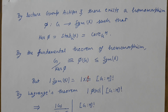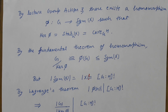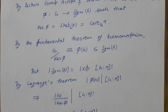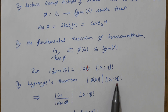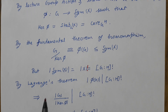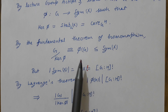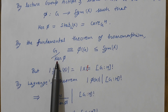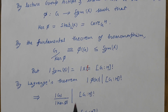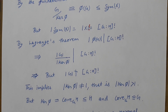By Lagrange's theorem, the order of any subgroup divides the order of the group. So the order of φ(G) divides the factorial of the index of H in G. This means the order of φ(G), which equals the order of G divided by the order of kernel(φ), divides the factorial of the index of H in G. But we are given that the order of G does not divide this number.